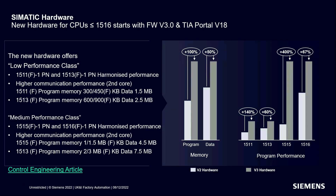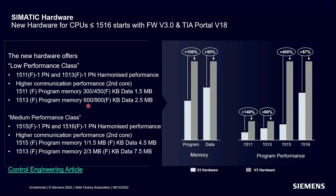The low performance class is the 1511, 1511F, 1513, and 1513F — they will have the same basic scan time performance, with the difference being memory. Program memory approximately doubles and data memory increases by 50%: the 1511 goes to 300K program memory, the 1511F to 450K. The 1513 gets 50% more data memory and 100% more program memory, with execution time improving by 60% for the 1513 and 140% for the 1511.